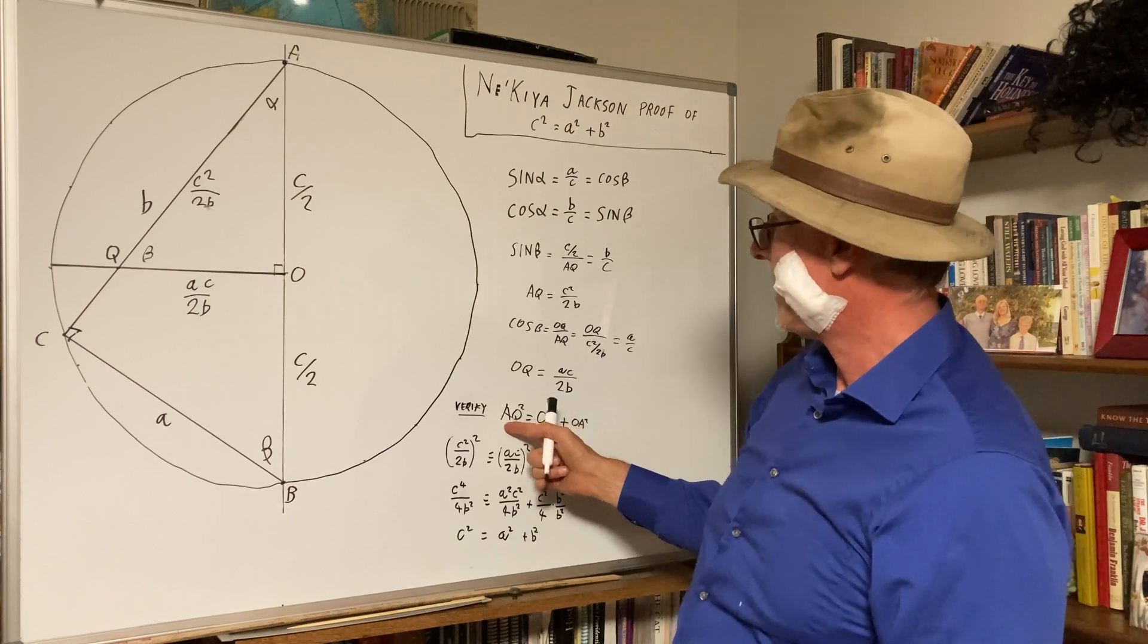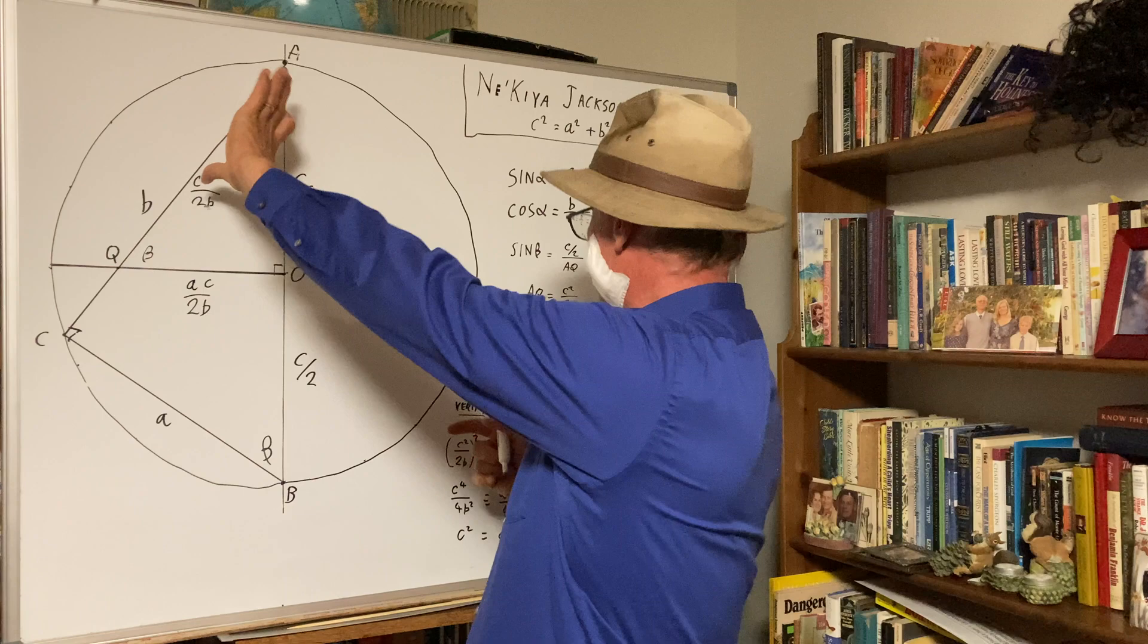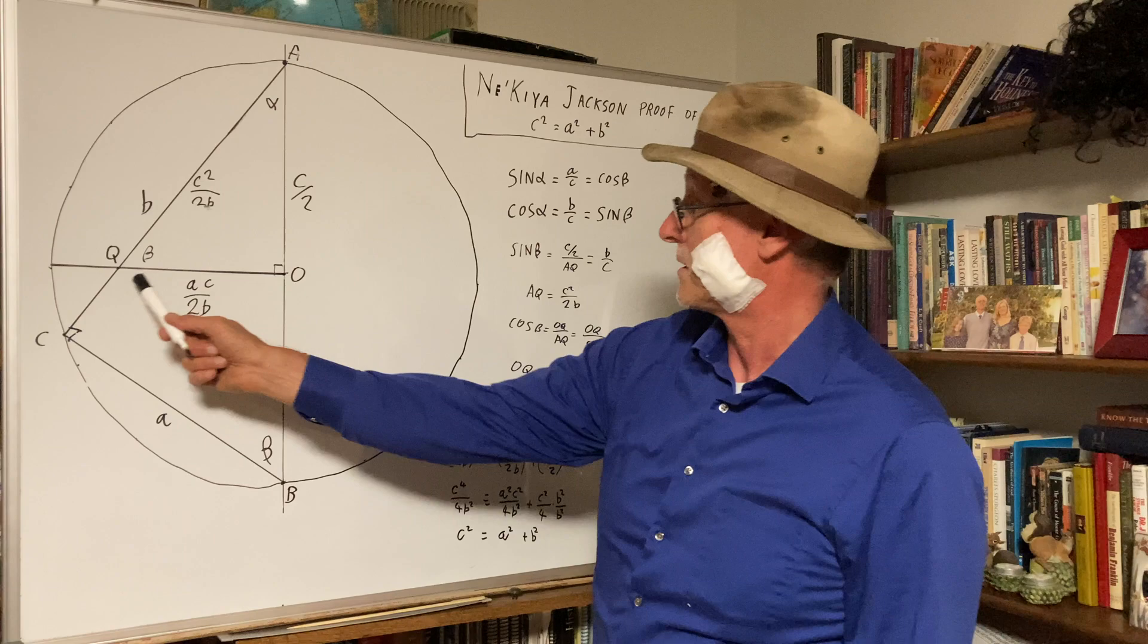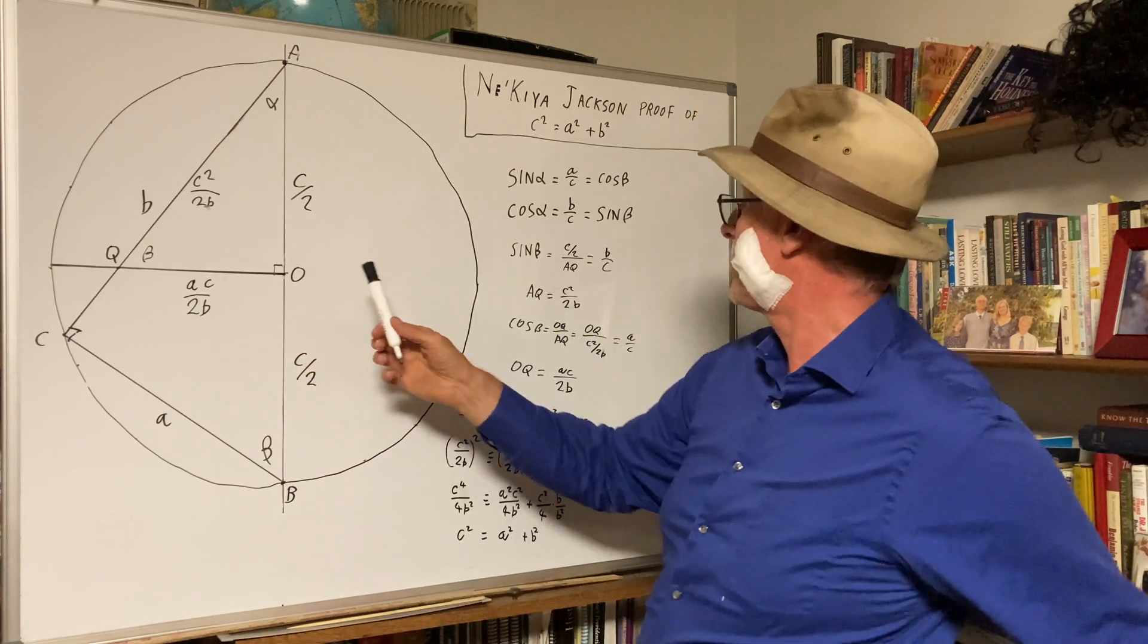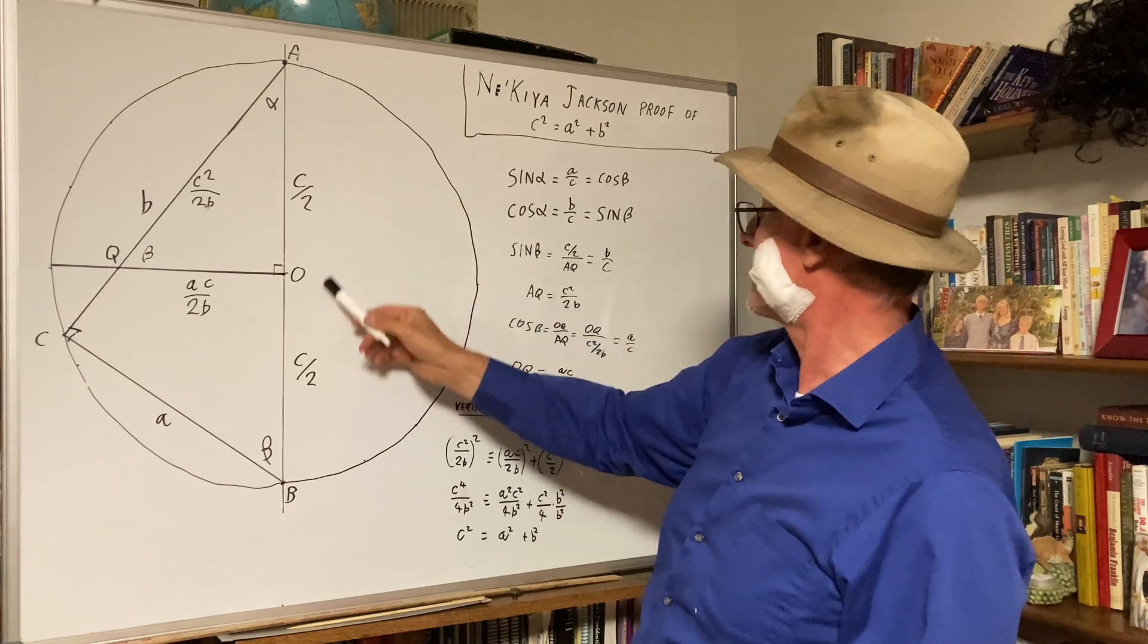So verify that AQ squared, that's distance here, that's the hypotenuse, is equal to OQ squared, that's this one squared, plus OA squared, that's this one here.